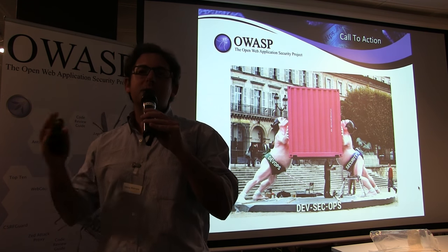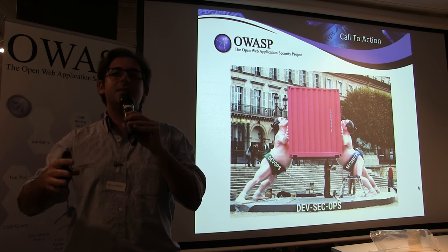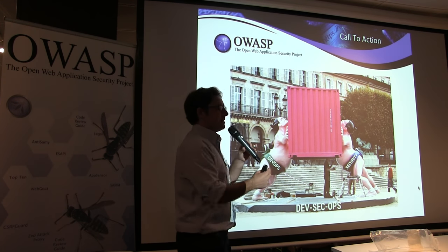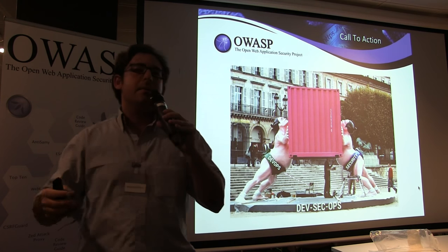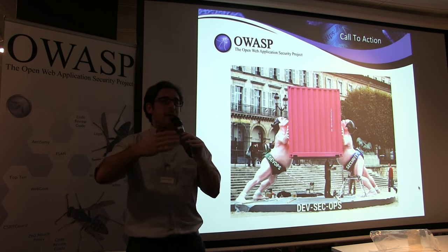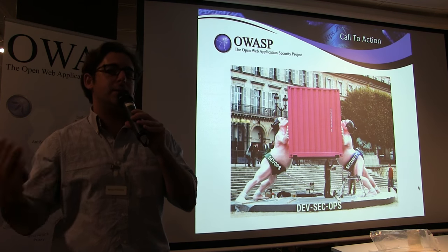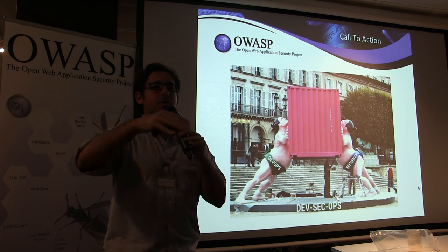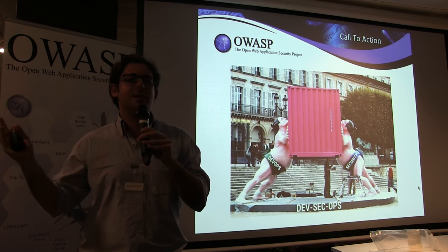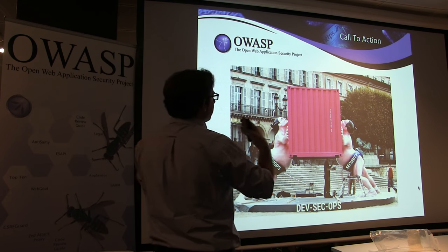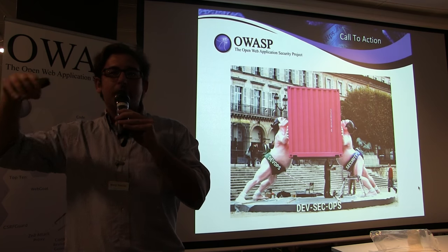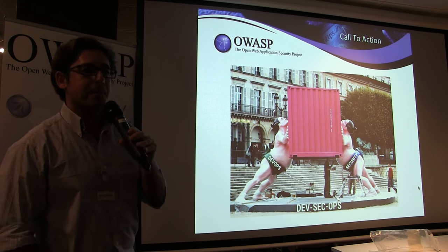DevSecOps is a buzzword many of you have heard. Traditionally there has been friction between development and security, but containers are helping foster collaboration between teams. Many of the biggest banks in the UK and Europe have a DevSecOps role — a broker who talks to both development and security, helping the security team apply controls within DevOps. This is 'shifting security to the left' — everything we've done in production, such as hardening and patch management, now has to be done in the Docker image, created by the developer.